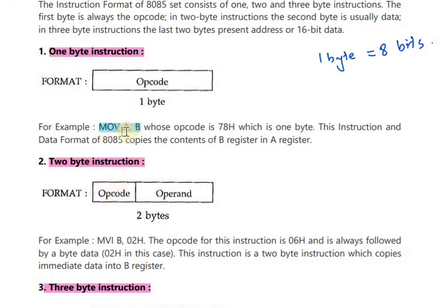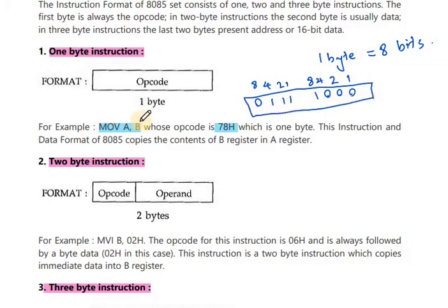One byte instruction: you can see the format is opcode, one byte. You know that one byte is equal to eight bits. Here an example is given: MOV A,B. The opcode is 78H. 78 is one byte, represented as 0111 1000. This is MOV A,B, which copies the contents of B register into A register.